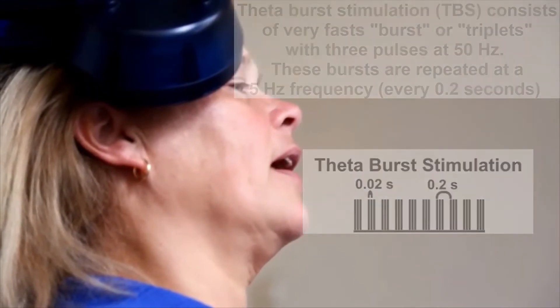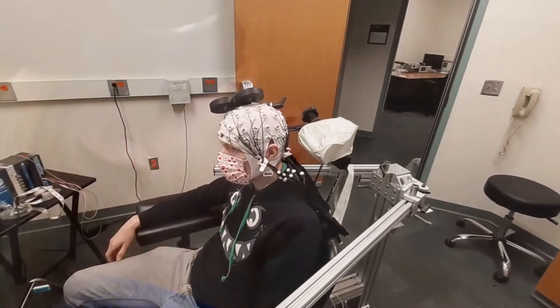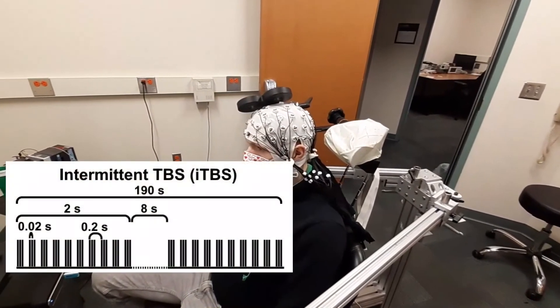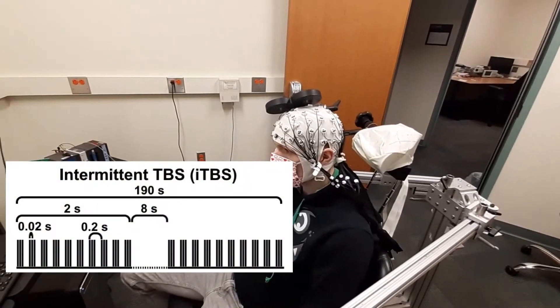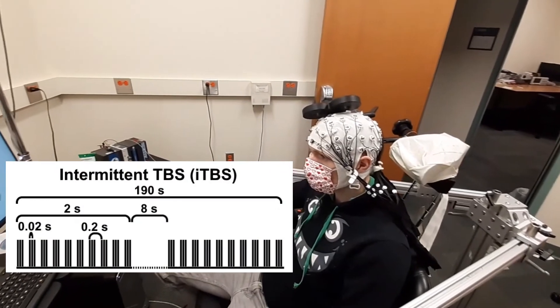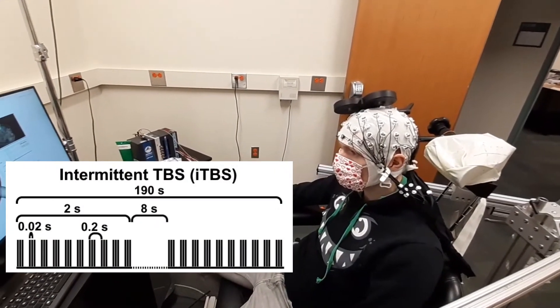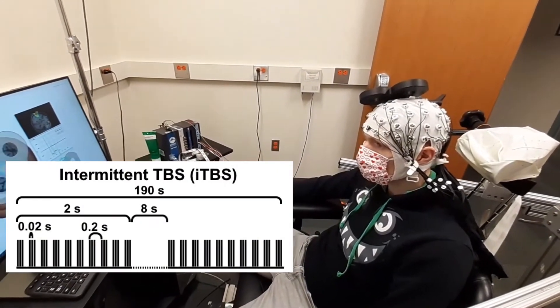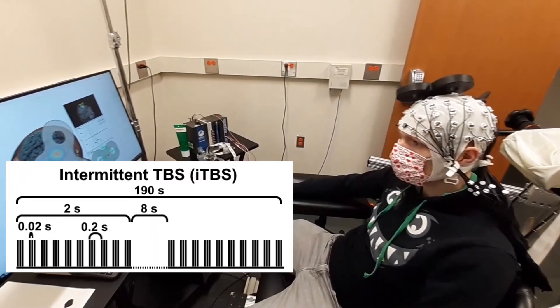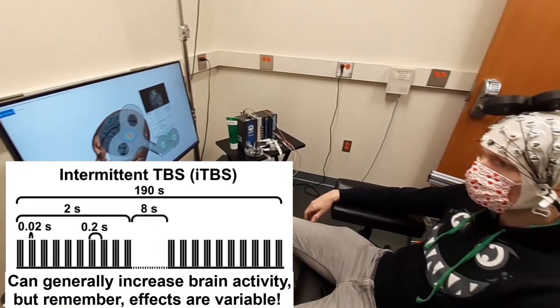So-called intermittent theta burst stimulation, or ITBS, applies such burst patterns for two seconds in a row, followed by an eight-second rest period. In total, ITBS is typically applied for around three minutes. This ITBS is thought to increase brain activity.